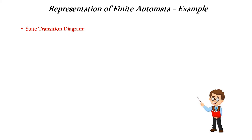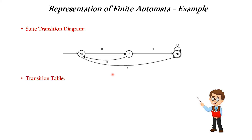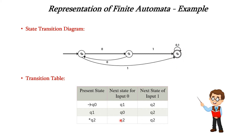Now let us see the example for state transition diagram and transition table. In this example, we have the start state indicated with an arrow with no source, and Q0 is the initial state. The inputs 0 and 1 are the edges, and the final state is indicated with a double circle. In the transition table, we have three columns: present state, next state for input 0, and next state for input 1. The initial state is represented with an arrow with no source and the final state is represented with a star.